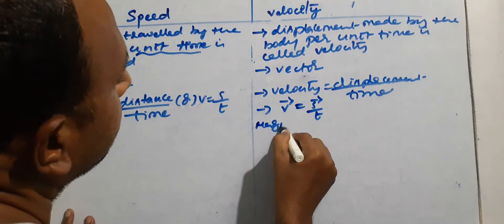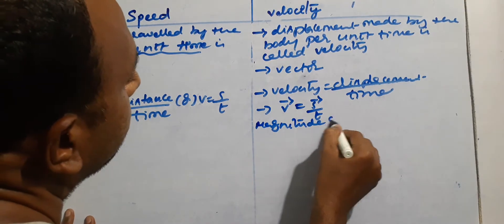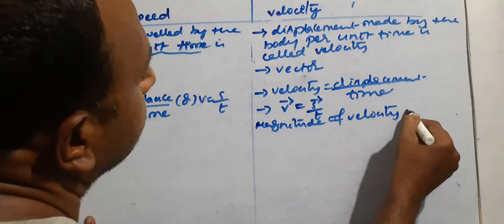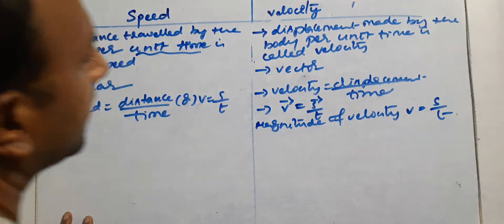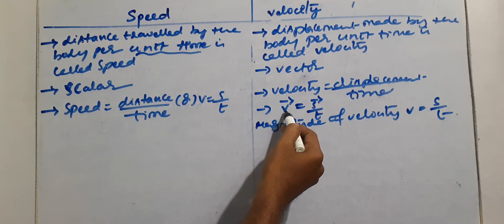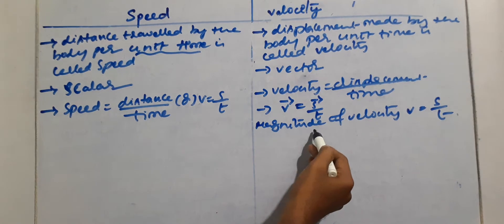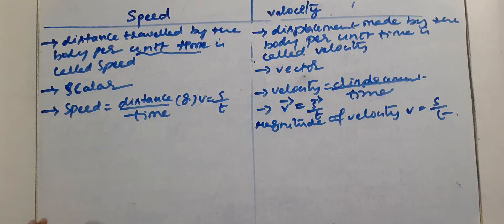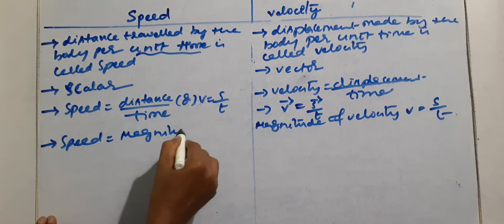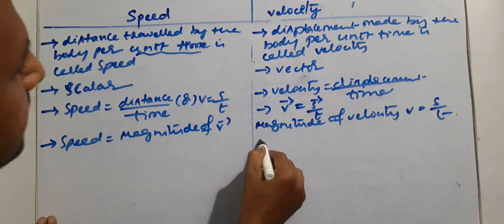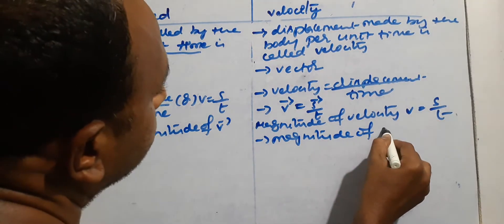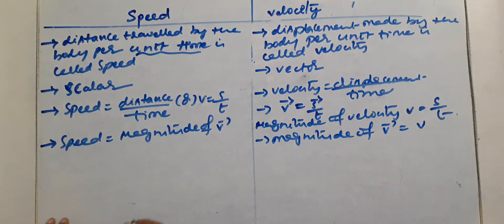The magnitude of velocity means taking only the magnitude, leaving out the direction. Magnitude of velocity can be written as V equals S by T — that is, magnitude of displacement by time. Since only magnitude is considered here, magnitude of velocity is equal to speed. Speed equals magnitude of velocity.